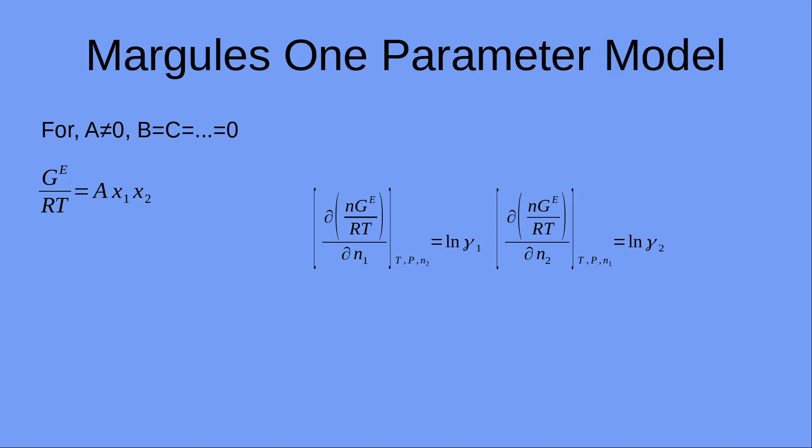We know that if we differentiate the total excess Gibbs free energy over RT with respect to N1 holding T, P and N2 constant, we get ln gamma 1. Similarly, we get ln gamma 2 when we differentiate the excess Gibbs free energy over RT with respect to N2 holding N1 constant.